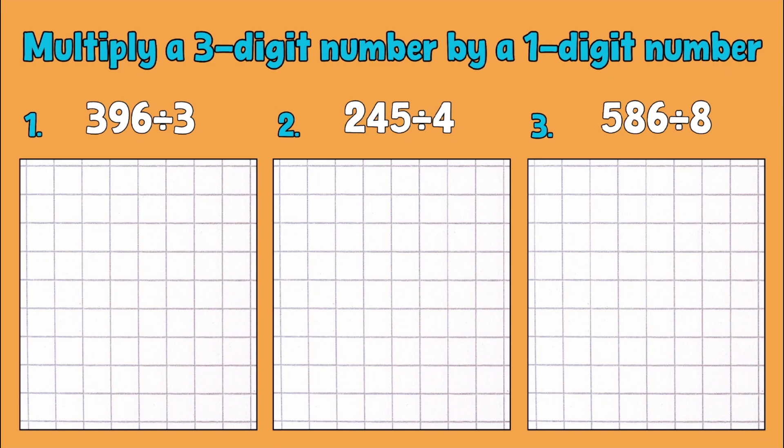For our first example we've got 396 divided by 3. So what we're trying to do is split 396 into three equal pieces. We've got our bar model here and we want to split it into three equal pieces. So that's essentially what we're trying to do.